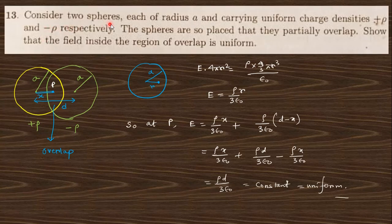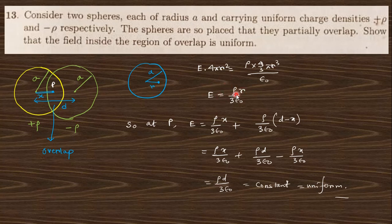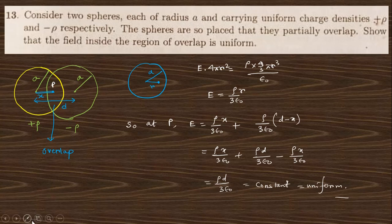Question 13: consider two spheres each of radius a carrying uniform charge densities +σ and −σ, displaced so they partially overlap. The electric field inside each sphere is ρr/(3ε₀). At any point P in the overlap region, one distance is x and the other is (d − x), where d is the separation between the centers. Adding the two contributions vectorially, the d terms remain and the field is constant — so the electric field in the overlap region is uniform.